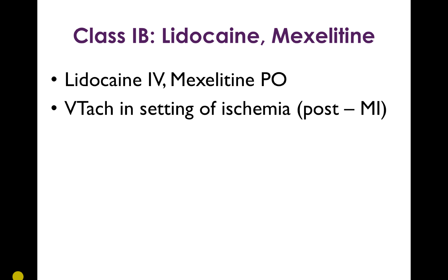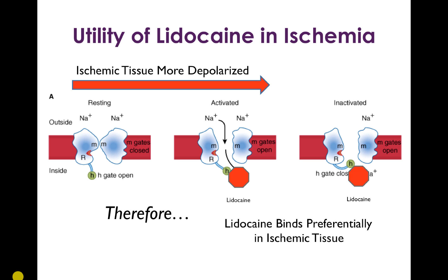Class 1b consists of lidocaine and mexiletine — the same lidocaine used in dentistry to block pain transmission in nerve conduction. These drugs have a special property that makes them useful in ventricular tachycardia in the setting of ischemia: ischemic tissue is more depolarized, so channels there are more likely to be in the activated or inactivated state, meaning lidocaine can preferentially bind in ischemic tissue. This makes it a nice drug to use in myocardial infarction, as it preferentially acts where most needed.